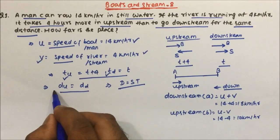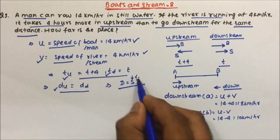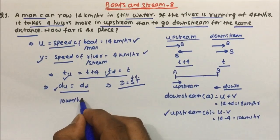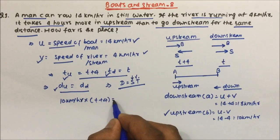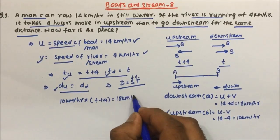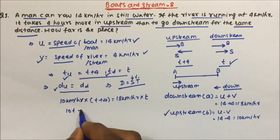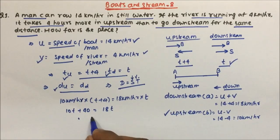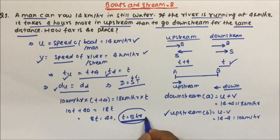Now we will use the formula. Distance in upstream equals speed into time, so upstream speed 10 km/hr multiplied by time (t + 4) equals downstream speed 18 km/hr multiplied by time t. So 10(t + 4) = 18t, which gives 10t + 40 = 18t. Therefore 8t = 40, so time t equals 5 hours.